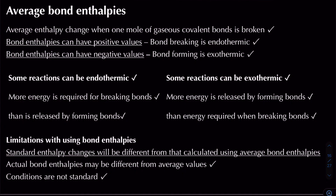In this video we're going to be looking at average bond enthalpies and how we can use these values to calculate enthalpy change itself. Average bond enthalpies is defined as the average enthalpy change when one mole of gaseous covalent bonds is broken.